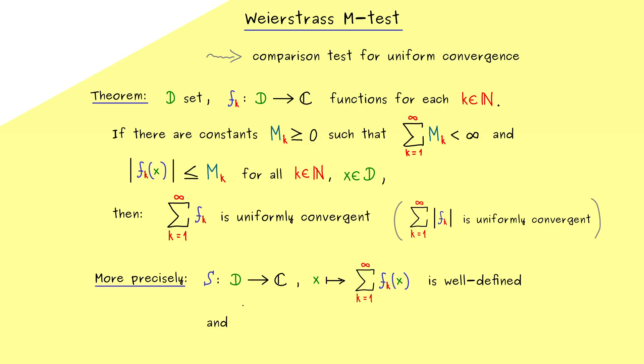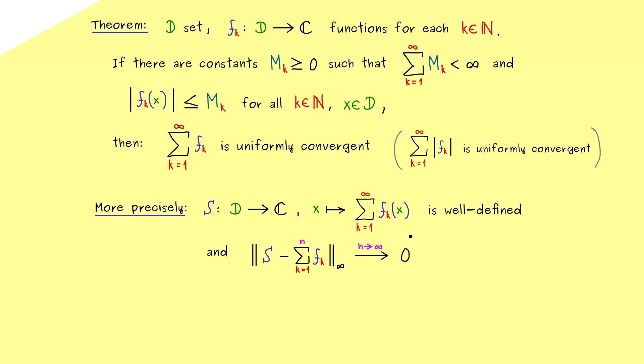And moreover, this capital S is the limit of the partial sums of the functions fk. And when I say limit, I mean with respect to the supremum norm. And please recall, the supremum norm is usually denoted with this infinity sign on the norm. Now S is the uniform limit for the partial sums, so this goes to zero when n goes to infinity. Hence, this is exactly what we mean by the uniform convergence stated in the theorem.